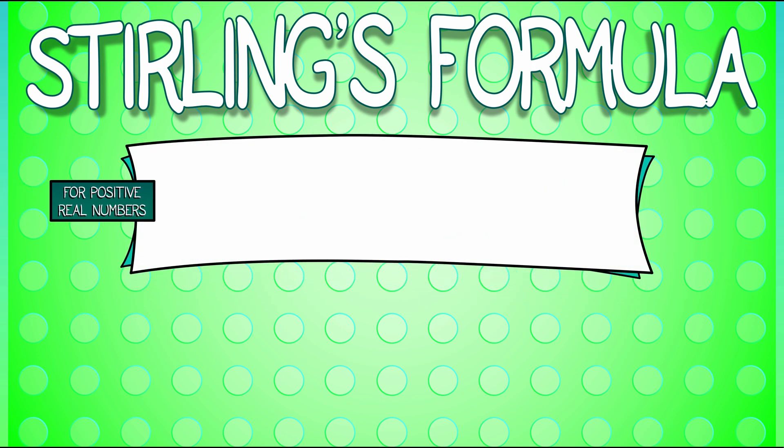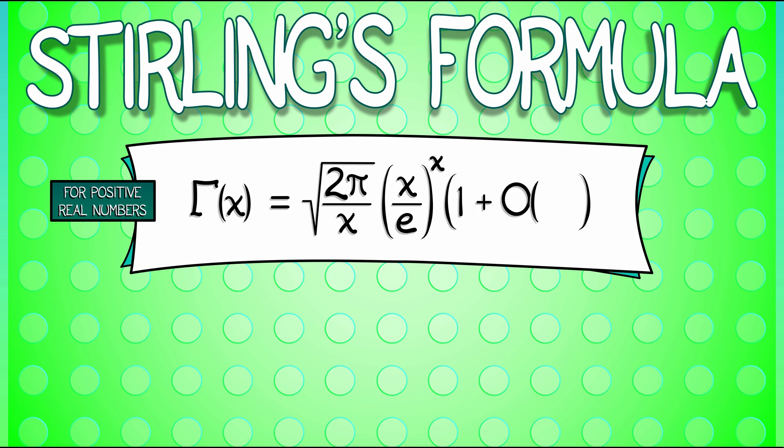It says that for real positive numbers, gamma of x can be written as square root of 2 pi divided by x times quantity x over e to the x power times quantity 1 plus big O of 1 over x. And this is where we get the idea that gamma of x is kind of like x to the x, but not exactly, because you have to divide by the square root of x and the e to the x, and you got the square root of 2 pi out in front. But the leading order term is telling you just how fast gamma of x grows.